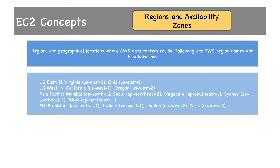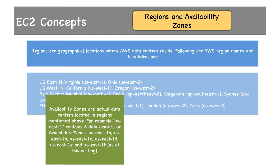Paris was launched last year itself. So Availability Zones or AZs are actual data centers located in the regions mentioned above. For example, the US East 1 region contains six data centers or AZs: US East 1A, 1B, 1C, 1D, 1E, and US East 1F as of today's recording.